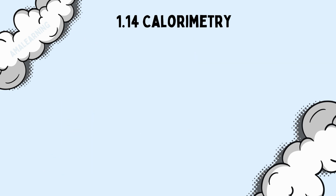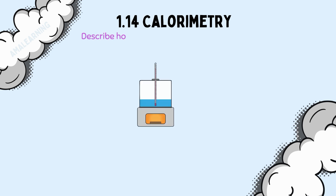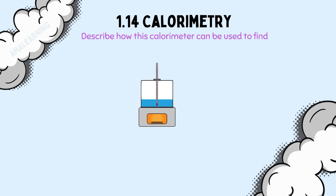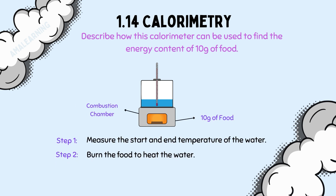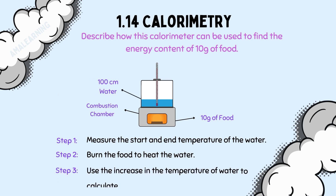This is an example of the type of question you might see in an exam: Describe how this calorimeter can be used to find the energy content of 10g of food. As you can see, this calorimeter has a combustion chamber where the food is burnt. The energy released by the food then heats up the water, and this temperature change is measured. The temperature is measured at the start and at the end. The overall increase in the temperature of the water can be used to calculate the energy content of the food.